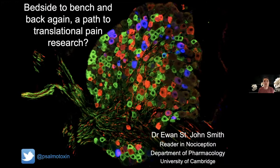Thank you, Dervila. The title of the talk is 'Bedside to Bench and Back Again: A Path to Translational Pain Research' — with a definite question mark. What I want to do is link up work we do in the lab, primarily with rodents, to what we're trying to do using human tissue and how those two might interrelate. This talk is also part of the 'Beyond the Neuron' theme that Cambridge Neuroscience is building, so there will be mention of non-neuronal cells being of importance.